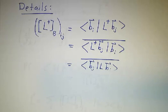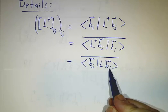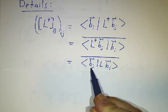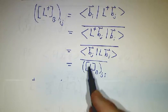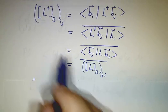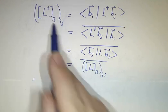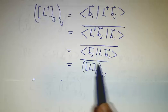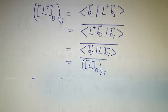And L on the right applied to b_i, inner product with b_j, well that's just the ji matrix element. So the ij matrix element of L' with respect to the b basis, is the conjugate of the ji matrix element of L with respect to the b basis.